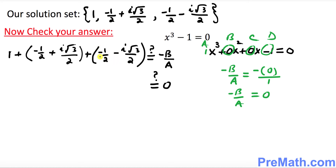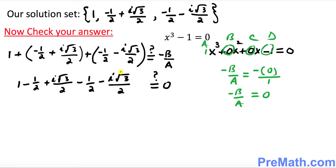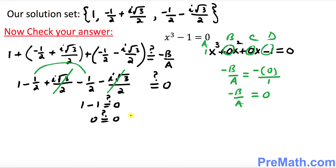Let's verify the left-hand side: 1 minus 1/2 plus i√3/2 minus 1/2 minus i√3/2. The imaginary terms cancel each other out. Then negative 1/2 and negative 1/2 combine to make negative 1. So we get 1 minus 1, which equals 0. Zero equals zero — confirmed! We've checked our answer. Thanks for watching and please subscribe to my channel for more exciting videos.